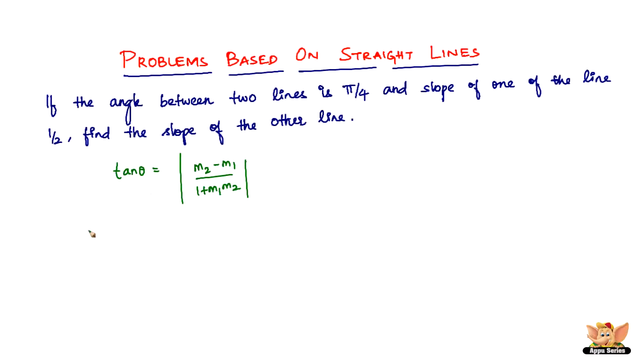So now let's say m1 is half, that is slope of one line, and m2 be equal to m.